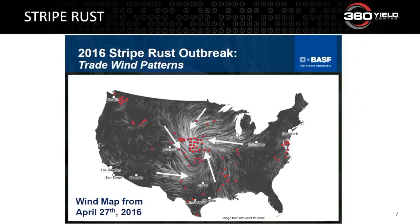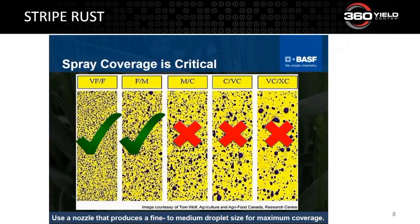This is a wind map from April 27th, demonstrating how rust overwinters in the south in mild conditions. You can see the wind patterns and all those little red dots document where stripe rust is so far — it documents how that rust came up from the south on the storm front. It continues to be more of an issue this year out in the west. Coverage is critical — a very fine or fine-medium droplet size is recommended to help improve coverage and help control many of these diseases.